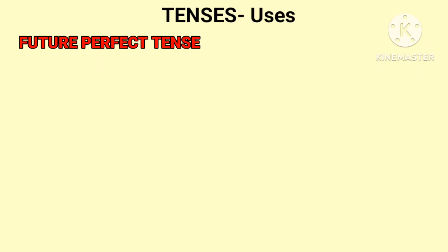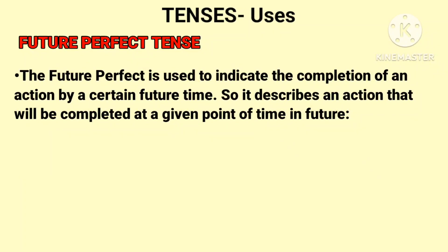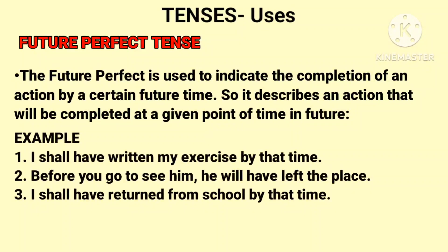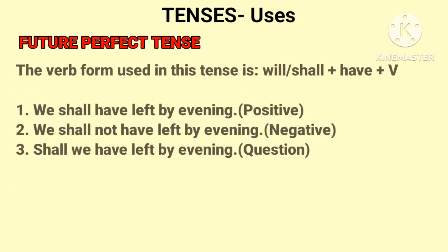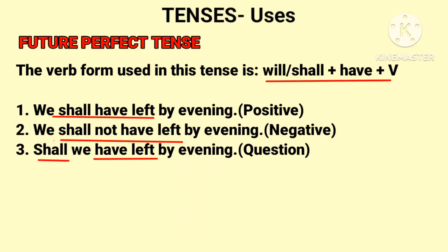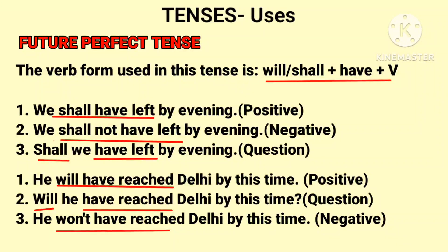The third one: future perfect tense. The future perfect tense is used to indicate the completion of an action by a certain future time. It describes an action that will be completed at a given point of time in the future. For example: I shall have written my exercise by that time — 'shall have written' is future perfect tense. Before you go to see him, he will have left the place — 'will have left' is future perfect tense. The verb form is will or shall plus have plus past participle. Positive: We shall have left by evening. Negative: We shall not have left by evening. Question: Shall we have left by evening?